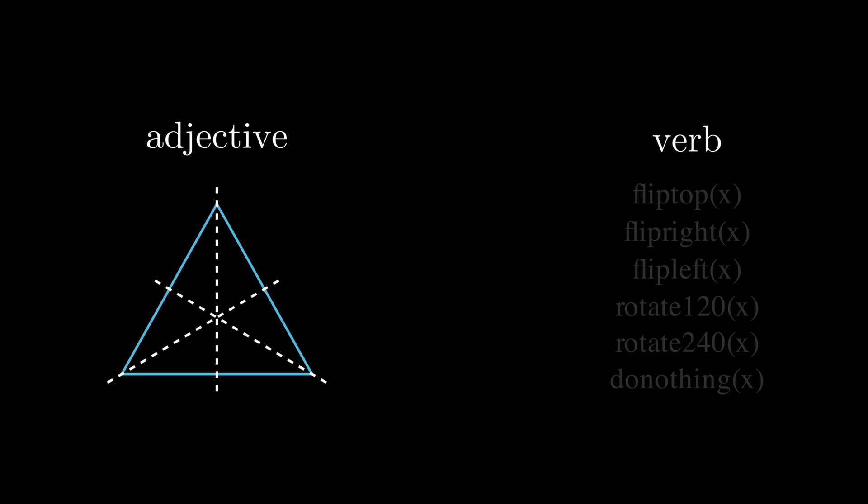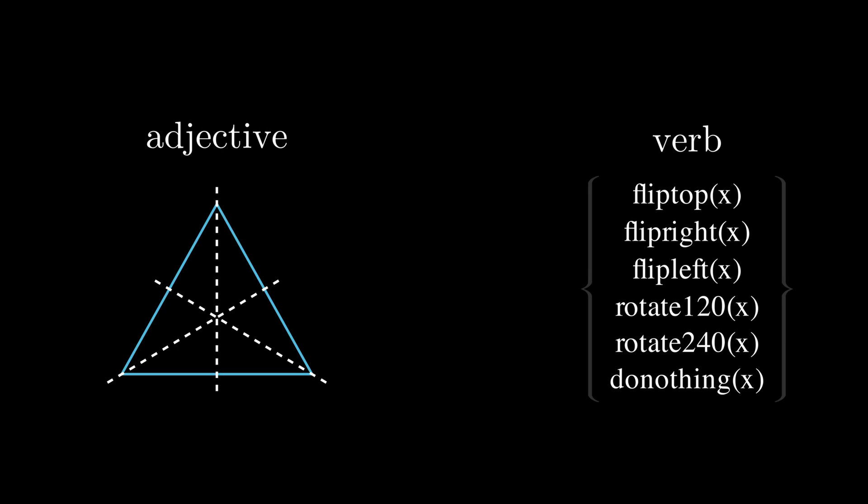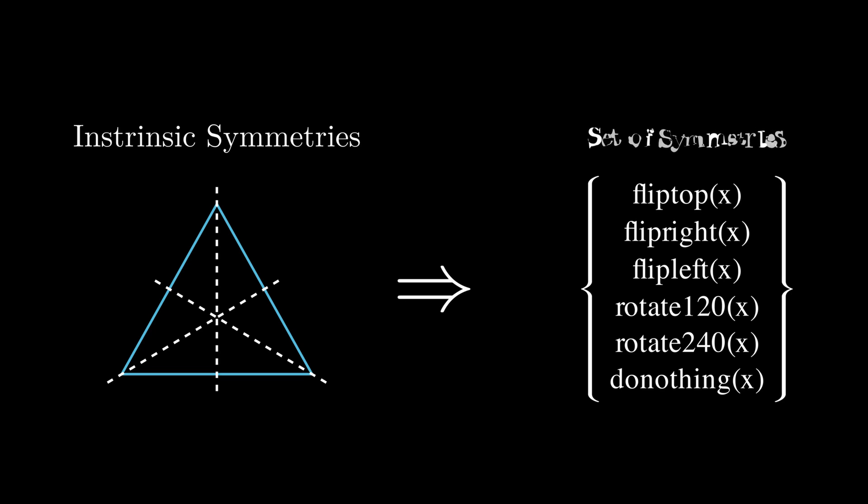Symmetry can be an adjective. For example, I can say that an equilateral triangle is symmetric. On the other hand, symmetry can refer to the actions themselves. I can refer to the six symmetries of an equilateral triangle. What happens with the equilateral triangle is that the intrinsic symmetry is exploited to produce the set of symmetries.